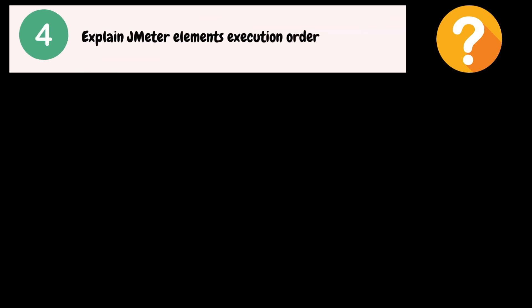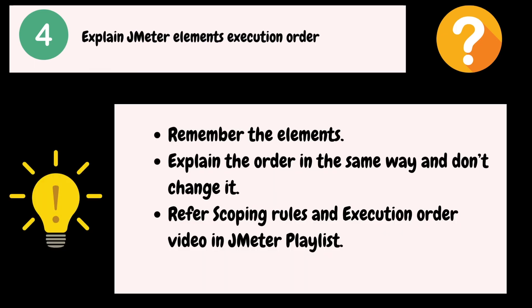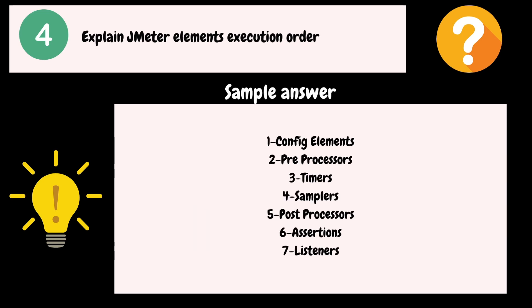Explain JMeter elements execution order. Here you need to remember all the element categories and explain the order in which they execute. Please do not try to change the order. We have a separate video to explain this concept, so if you are not sure, please watch that video. Here is the answer: first, Config Elements will be executed, then Pre-Processor elements, after that Timers, Samplers, Post-Processors, Assertions, and finally Listeners.